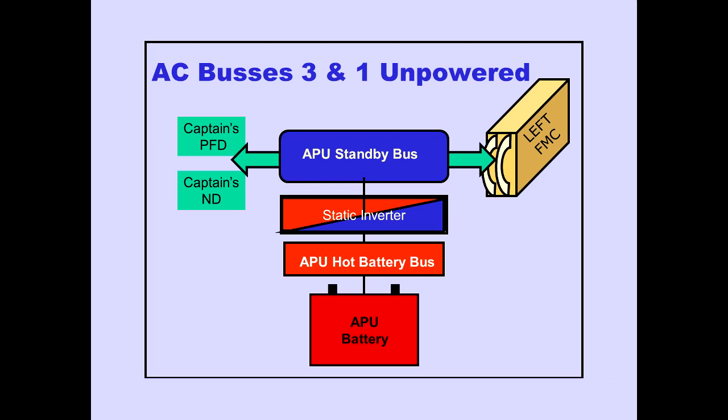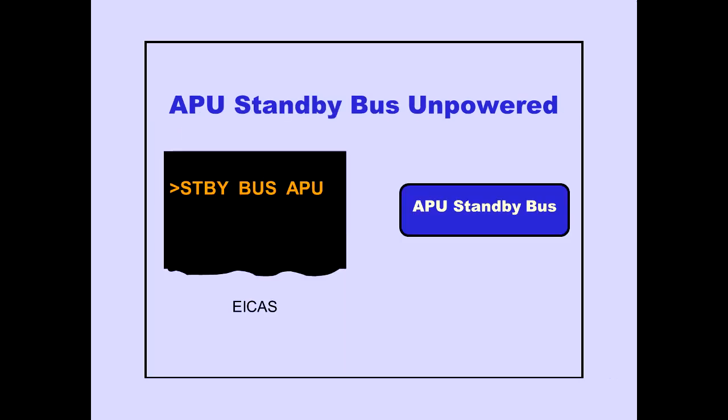With the standby power selector in auto, the APU standby bus automatically receives power from the APU battery through the APU hot battery bus and the APU standby inverter. The ICAS advisory message 'standby bus APU' is displayed when the APU standby bus is unpowered.